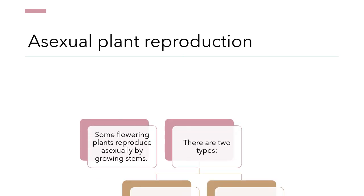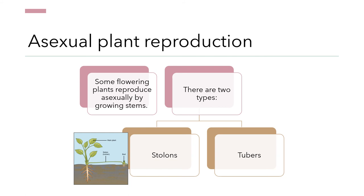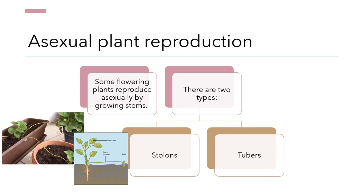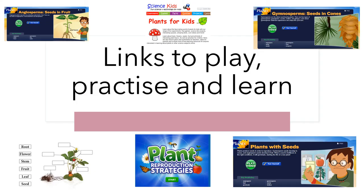Asexual plant reproduction. In some flowering plants, they can reproduce asexually by growing stems. There are two types: one of them is stolons — for example, the strawberry plant — and the other type is tubers, for example, potatoes.